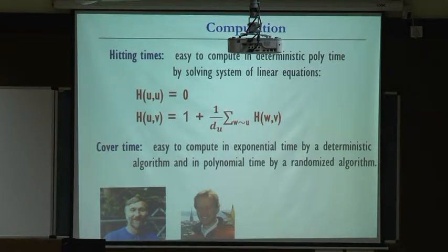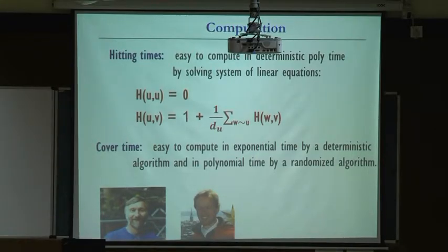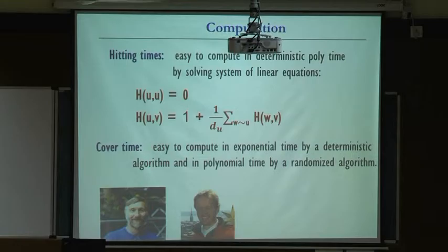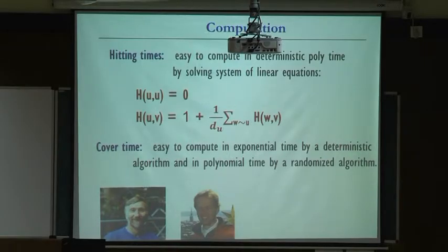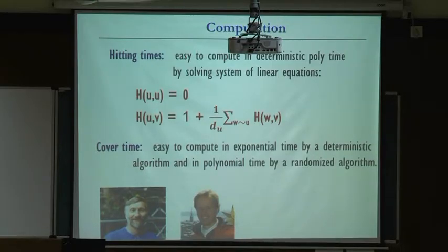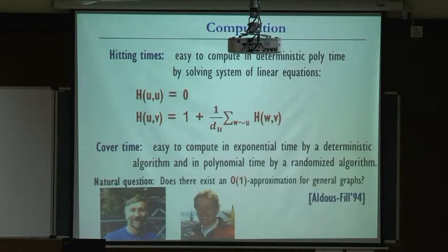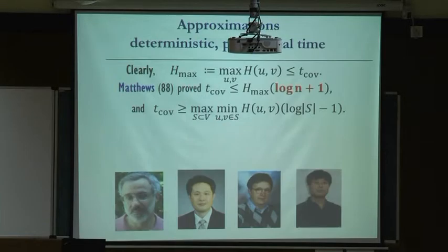A question posed by Aldous and Fill in the 90s: can we compute cover times quickly and deterministically? 'Quickly' means polynomial time in the size of the graph. They didn't expect an exact calculation but asked: can you even estimate them up to a reasonable constant deterministically? If you're willing to randomize, you can just run the random walk many times since cover time is at most N cubed, average the cover time over many experiments, and get a statistical estimate. They asked for a deterministic procedure.